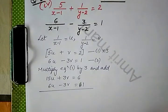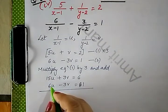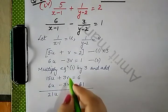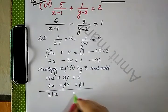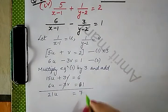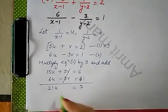Adding the two, dono ko add karte hain: 15 plus 6 that is 21u, ye cancel ho gaya, and 6 plus 1 that is 7. So what is u?